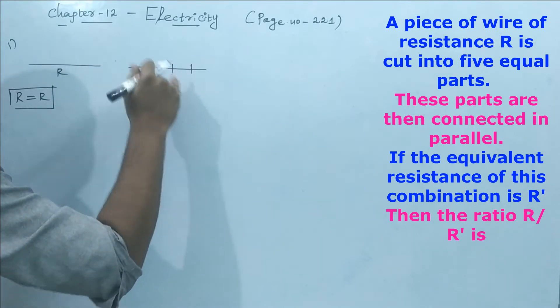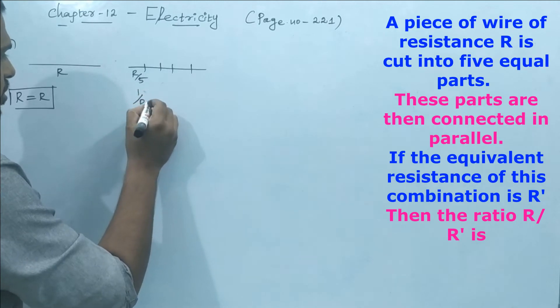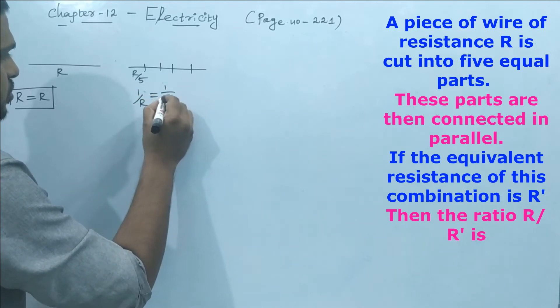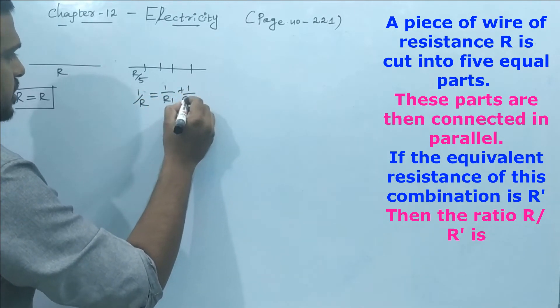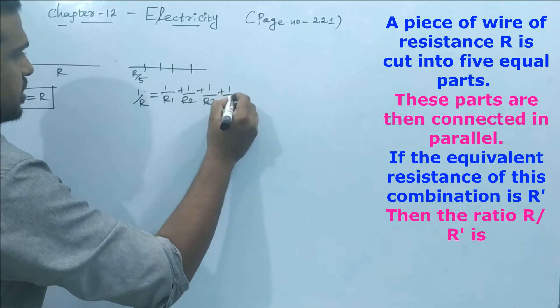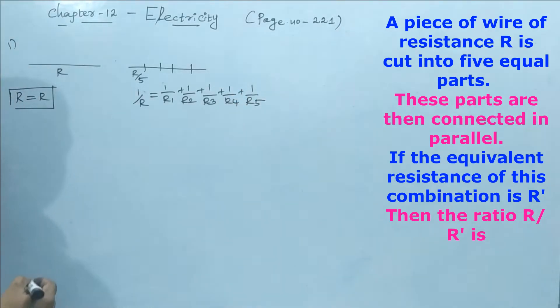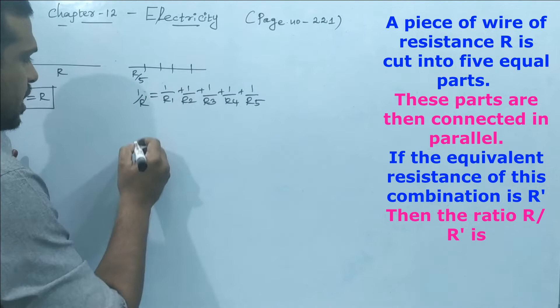These parts are connected in parallel, so we have the resistance formula: 1/R = 1/R1 + 1/R2 + 1/R3 + 1/R4 + 1/R5 for five parts. We'll take this as R' according to the question.